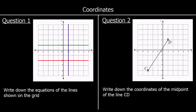To finish up we've got two questions. For the first one — write down the equations of the lines shown on the grid — the green line is all the points where y equals 1. The red line is all the points where y equals negative 2. And the purple line is all the points where x equals 1.